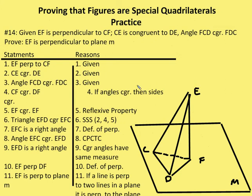Let's look at the two-column proof. EF is perpendicular to CF — that's given. CE is congruent to DE — given. Angle FCD is congruent to angle FDC — given. Therefore, CF is congruent to DF, because if angles are congruent the sides opposite them are congruent. And EF is congruent to itself by the reflexive property. So I have two triangles congruent by SSS.